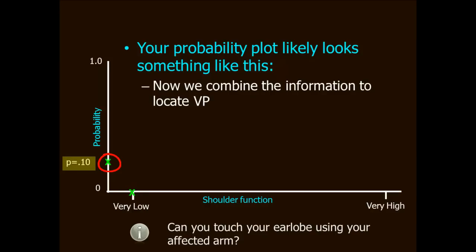VP has very low shoulder function and has low probability of saying yes to this item. On my plot here I've estimated the probability at 0.10 or about 10%. VP is pretty pitiful when it comes to shoulder function. Now we combine this information to locate VP on the plot.